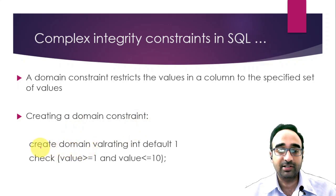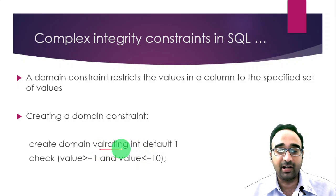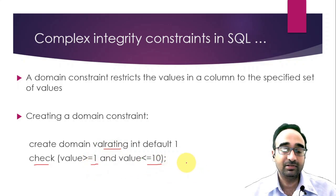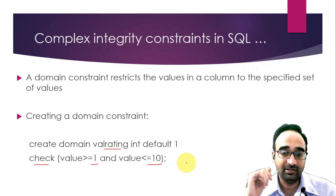The syntax to create a domain constraint is: CREATE DOMAIN, followed by the domain name. Here I'm creating a domain called val_rating, meaning valid rating, based on the existing data type INTEGER. The default value is 1, so if no value is given, 1 is used. I'm also adding a CHECK to ensure the value is between 1 and 10. If 0 or 11 or 12 is given, it will raise an error.